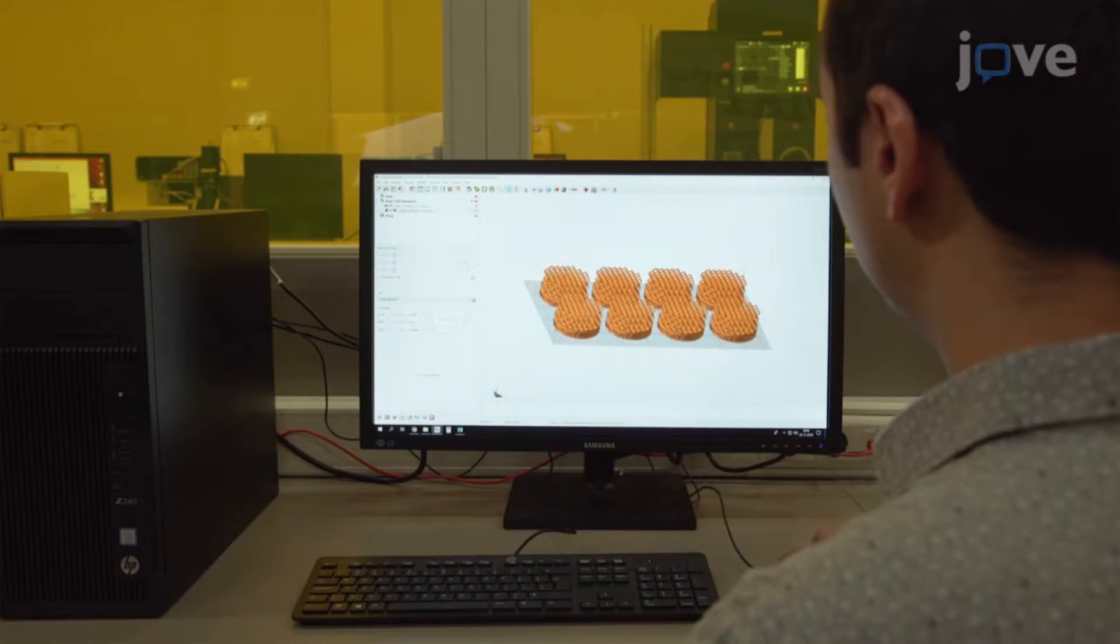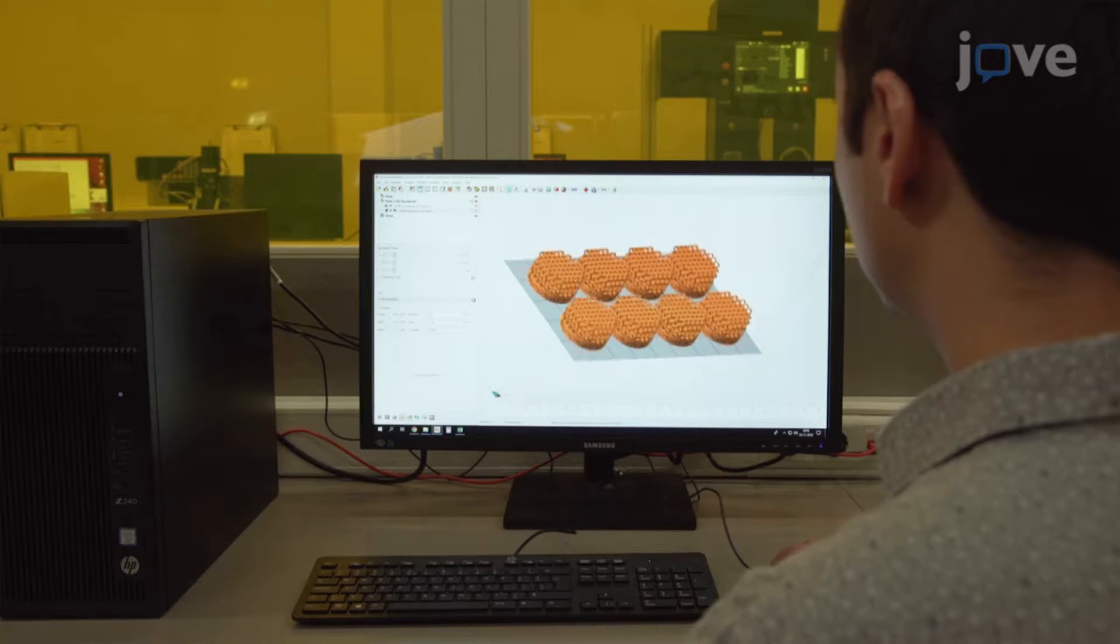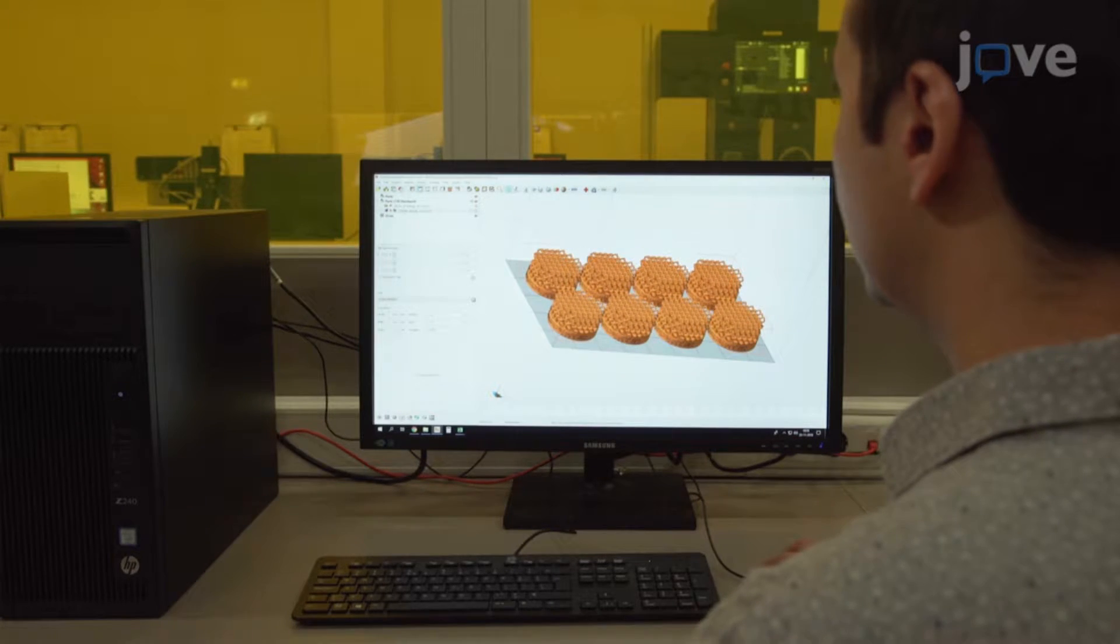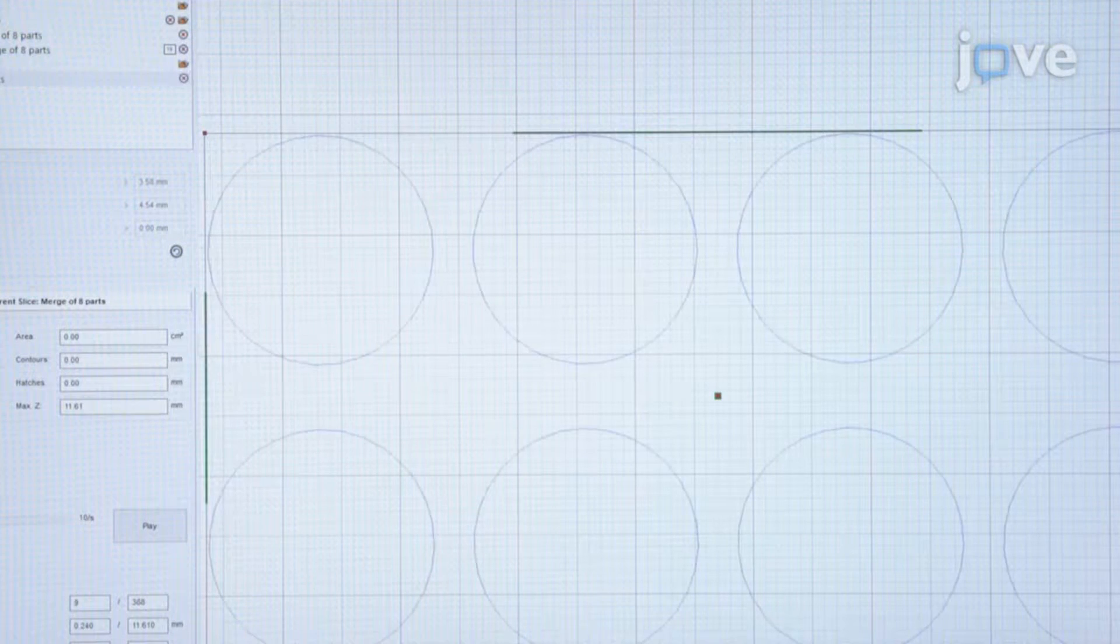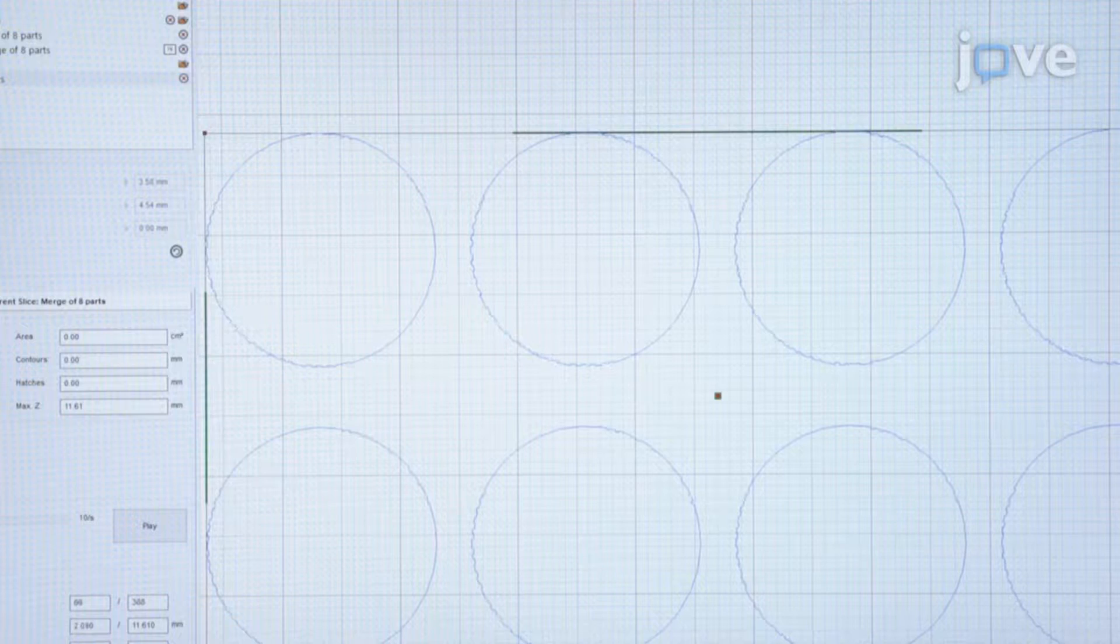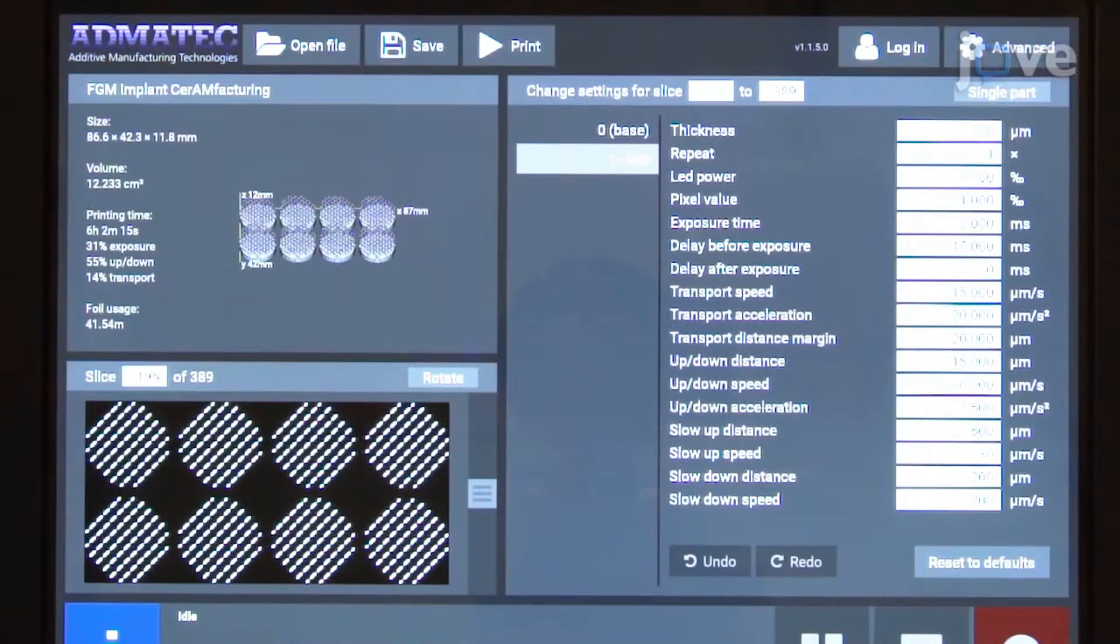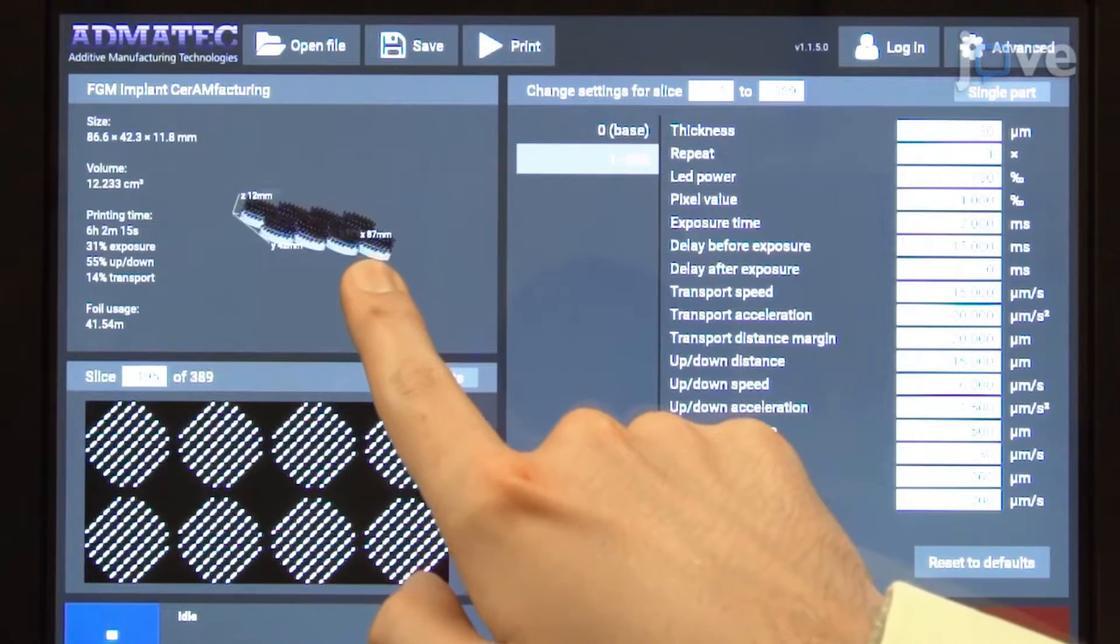Then, generate a 3D model file of the component with computer-aided design software. Slice the component model into layers of the appropriate thickness and save the file in a stereolithography contour format. Transfer this file to the printing device by network or USB.